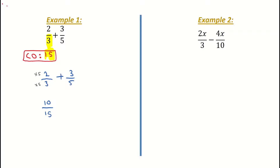Now I come over to my second fraction, the 3 over 5, and I do the same steps again. I figure out how do I make this 5 become a 15. In order to make it a 15, I divide the 5 into 15 and get 3. So I need to multiply my second fraction by 3, and I have to multiply both the numerator and the denominator by 3. When I do that, I have 3 by 3, which is 9, and 3 by 5 is 15.